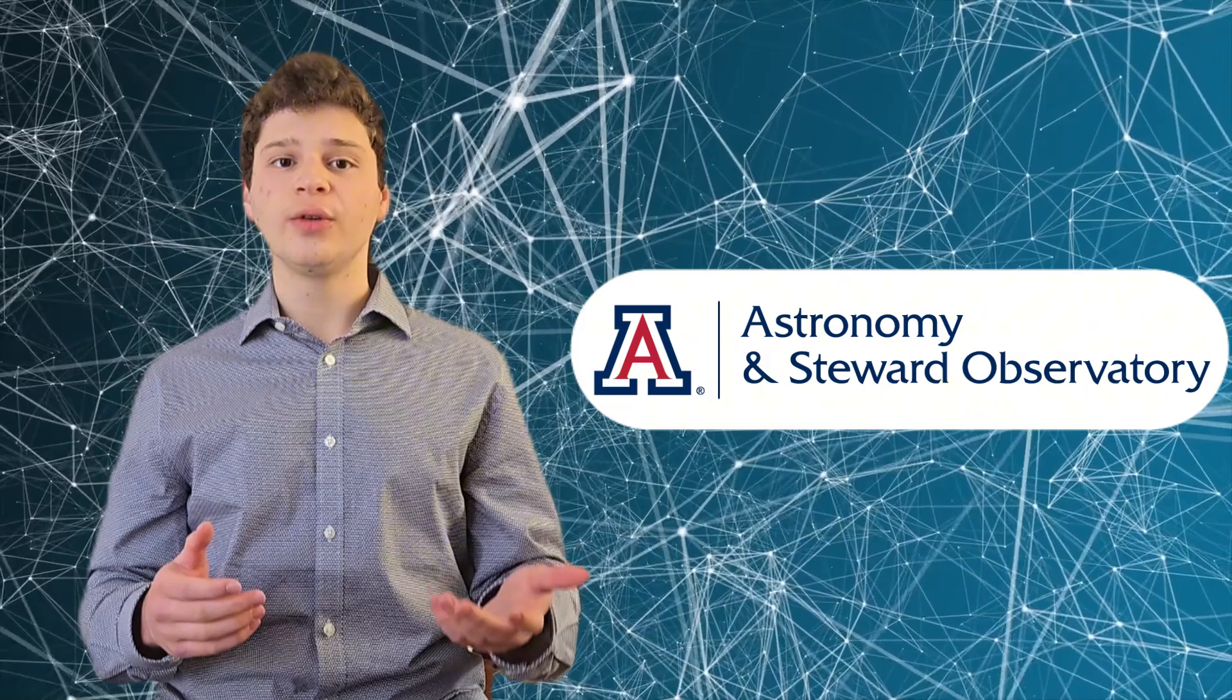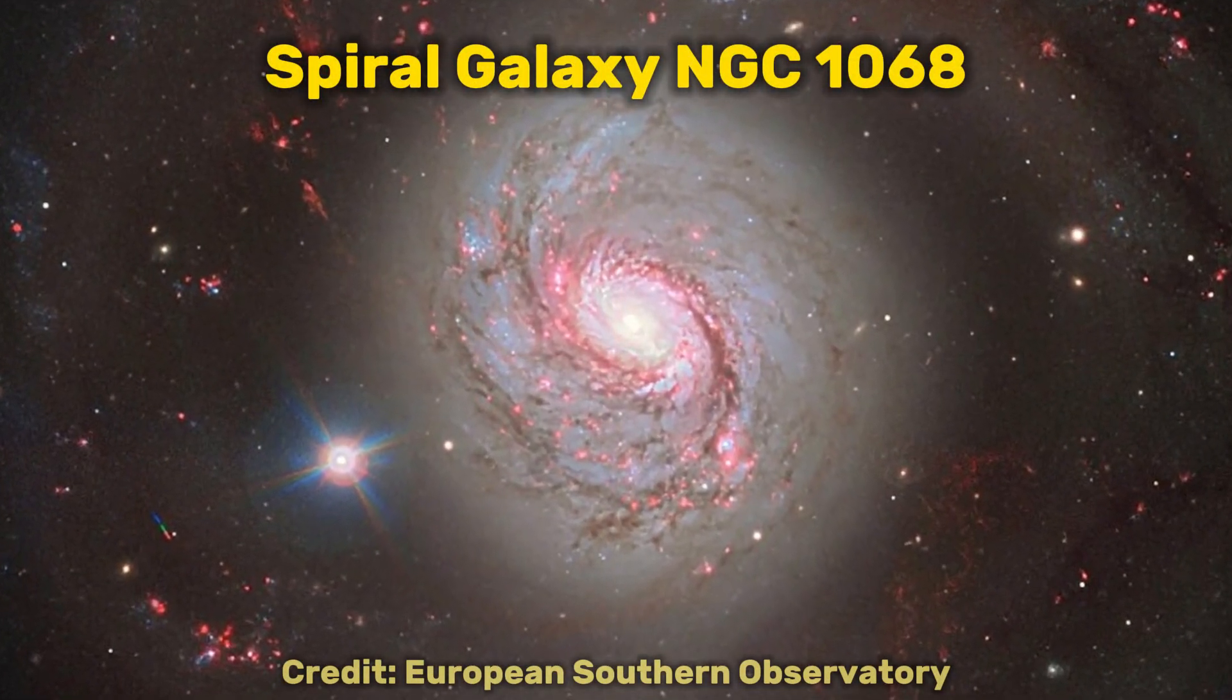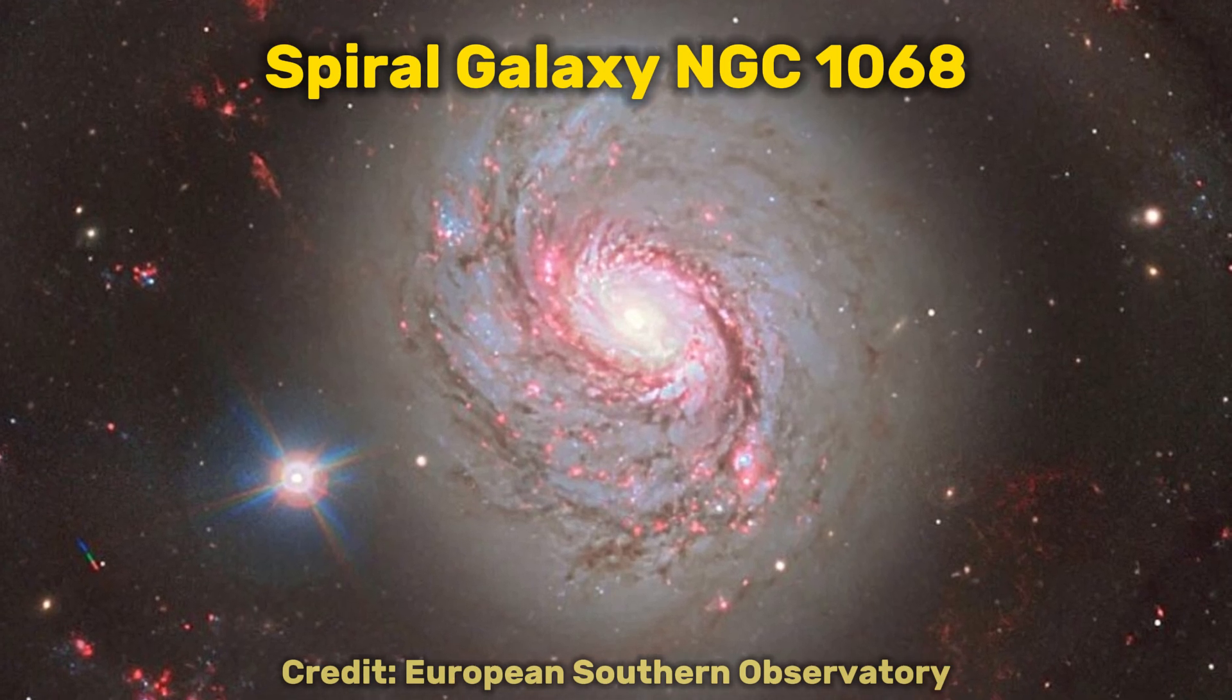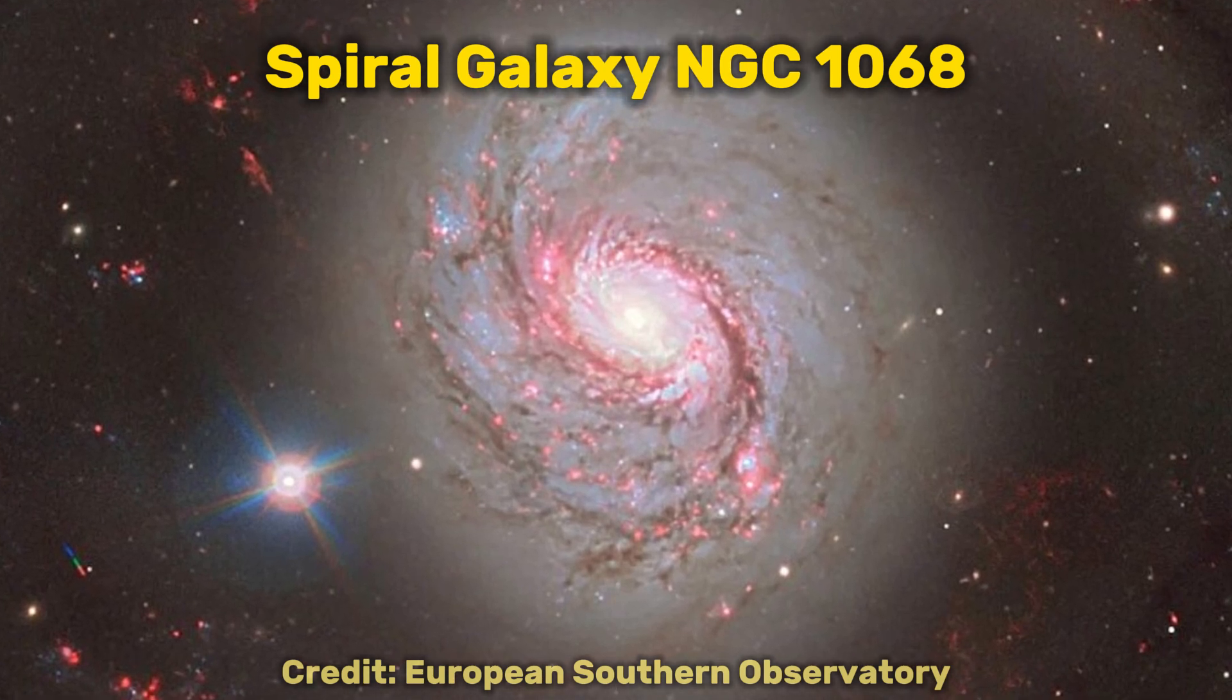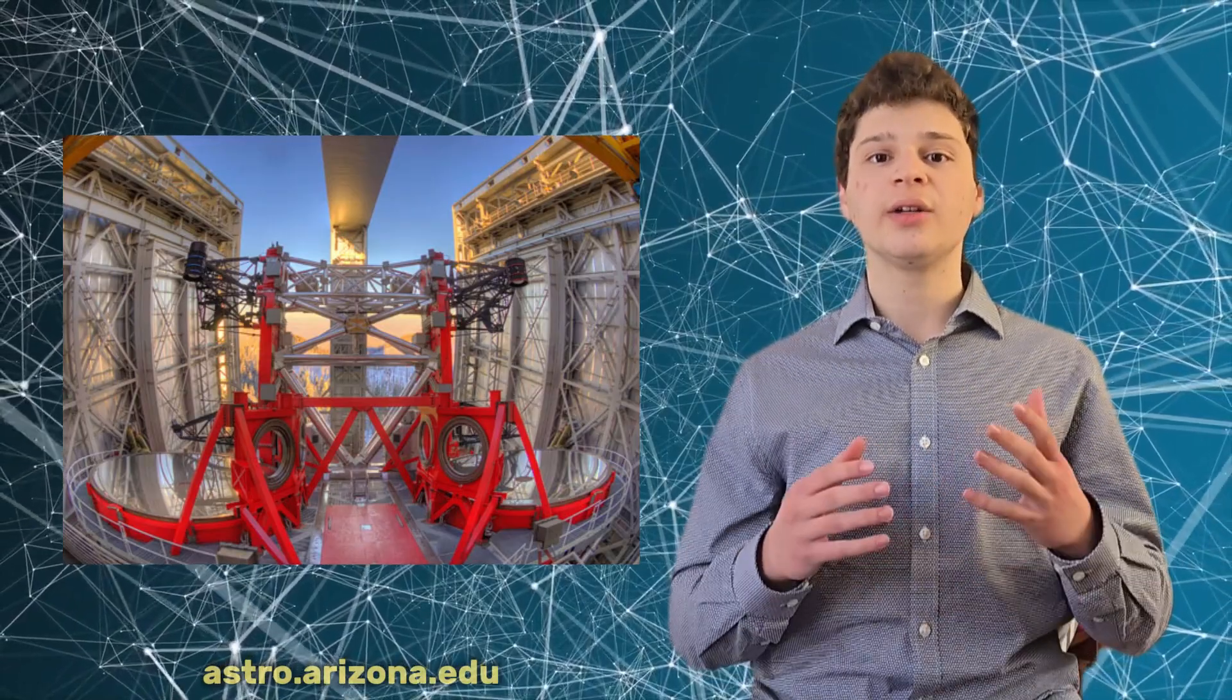Recently, astronomers at the University of Arizona captured the highest resolution infrared images ever taken of an AGN, using a tool called the Large Binocular Telescope Interferometer, located on Mount Graham in Arizona.